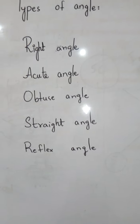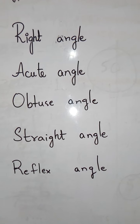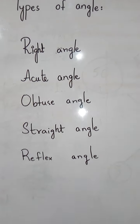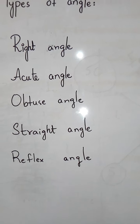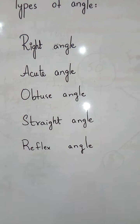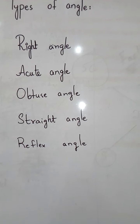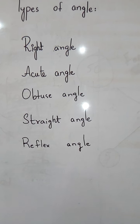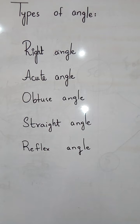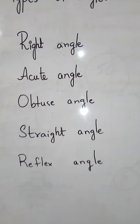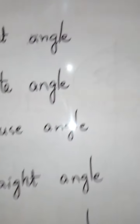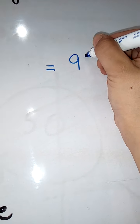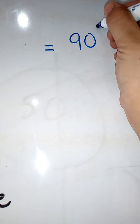We will start with the first and most basic type: the right angle. A right angle is an angle formed when the distance between the two arms is equal to 90 degrees. The distance between the two arms should be equal to 90 degrees, and it looks like this.